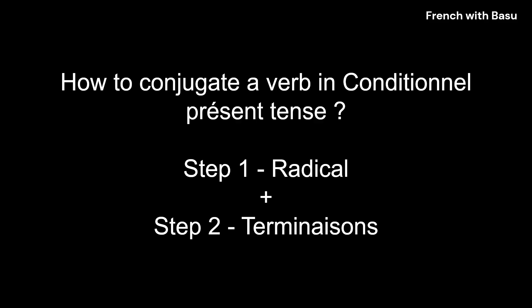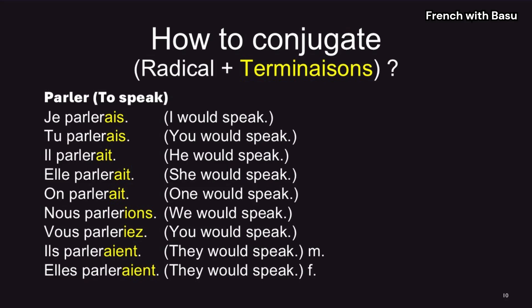Let's check out the conjugaison. Parler from the first group — the radical is the full spelling of the verb, then we add the terminaisons: -ais, -ais, -ait, -ait, -ions, -iez, -aient. Je parlerais, meaning I would speak. Tu parlerais, meaning you would speak. Il parlerait, elle parlerait, nous parlerions, vous parleriez, ils parleraient, elles parleraient.